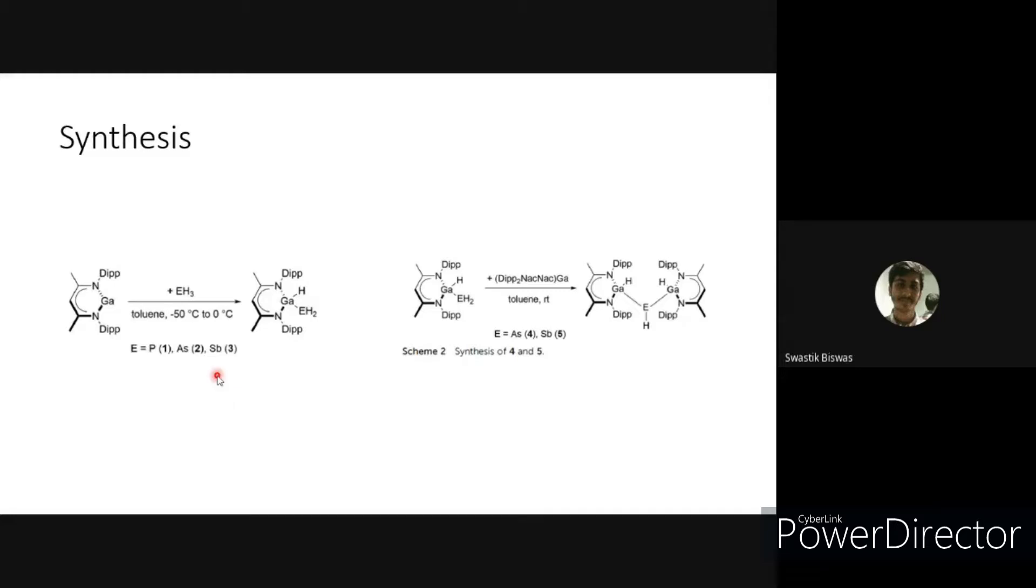Use of SbH3 as a starting material has not yet been described in molecular chemistry, apart from preparation of coordination compounds like M(CO)4-SbH3 where M can be chromium, molybdenum or tungsten.